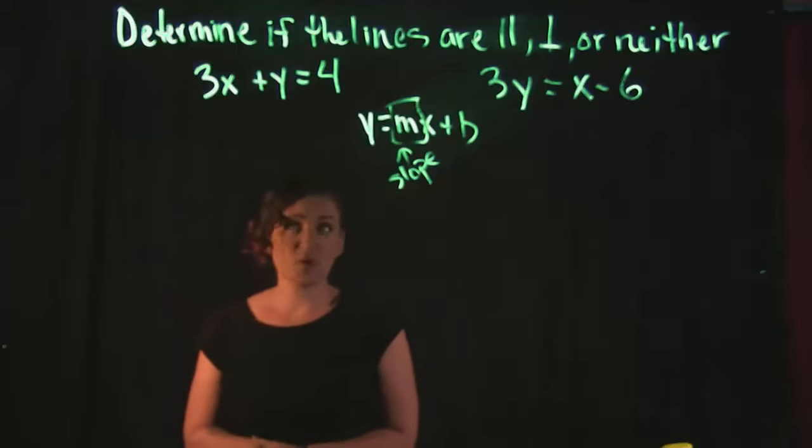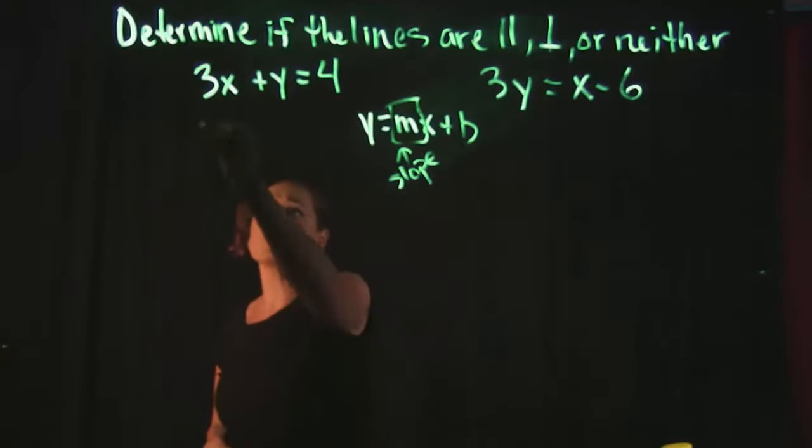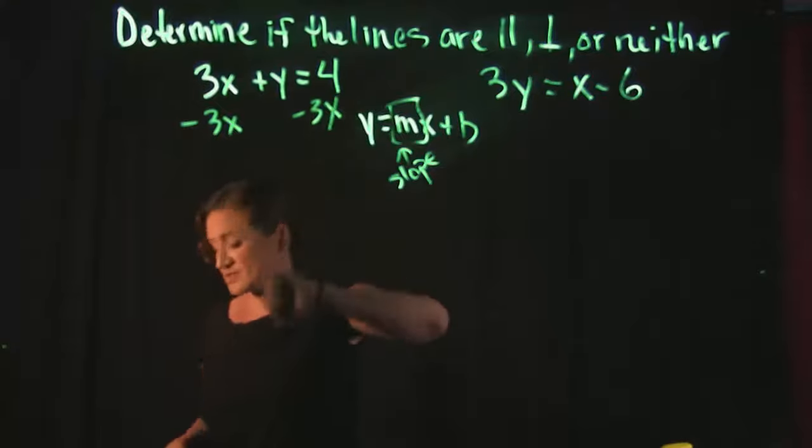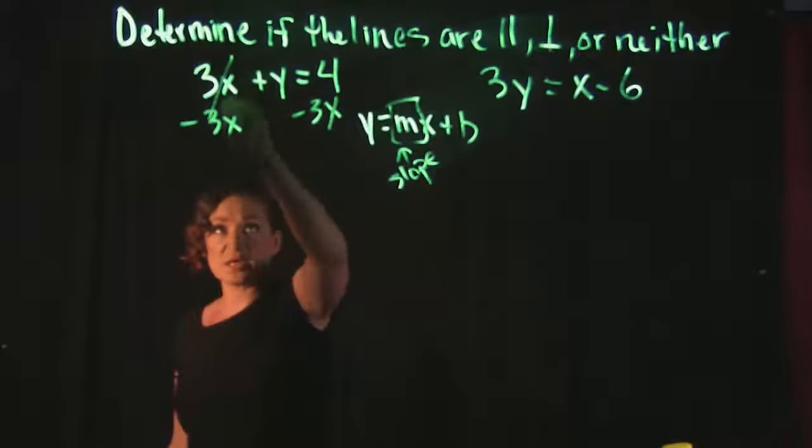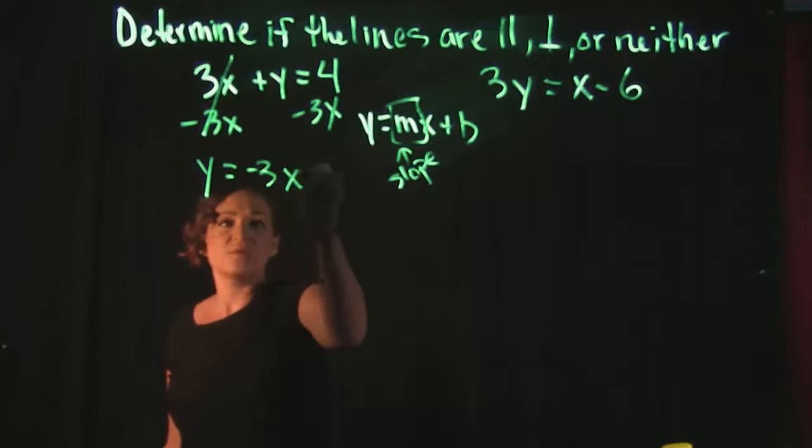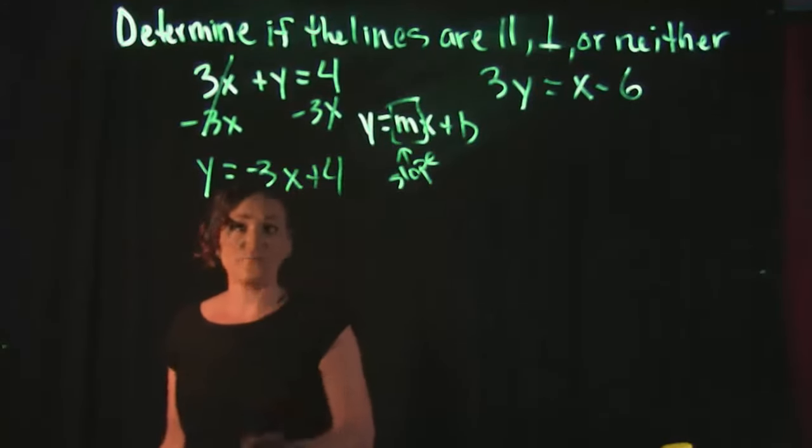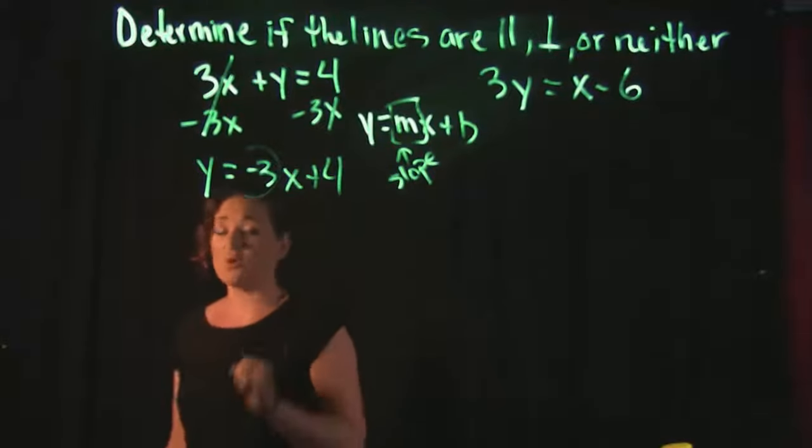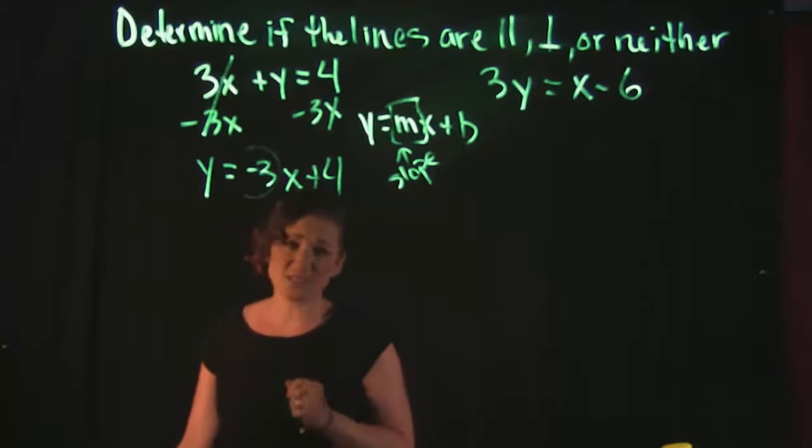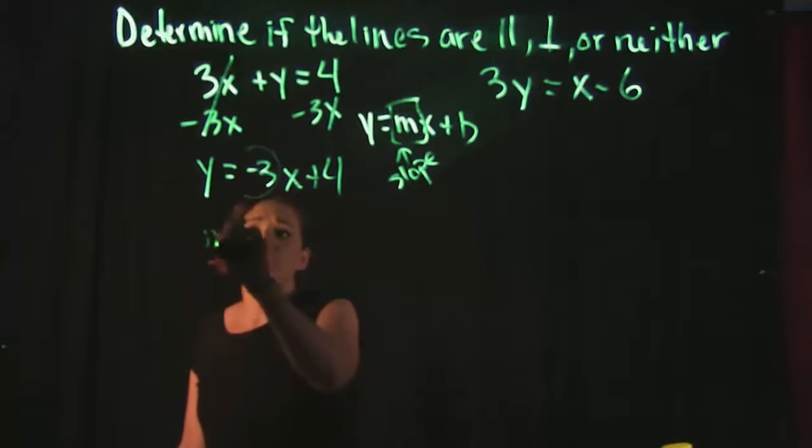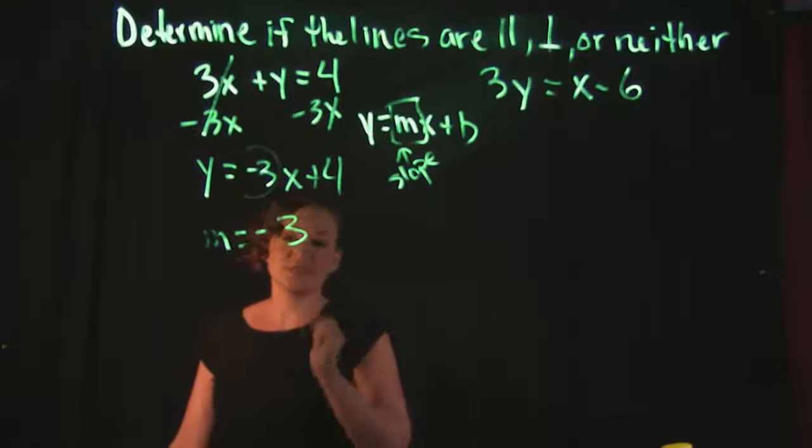I'm gonna get both of these equations solved for y. Over here on the left all I gotta do is subtract this 3x on both sides. 3x minus 3x cancels, leaving me with y equals negative 3x plus 4. So my slope here is a negative 3 because your slope is the coefficient of your x term as long as it's in slope intercept form.